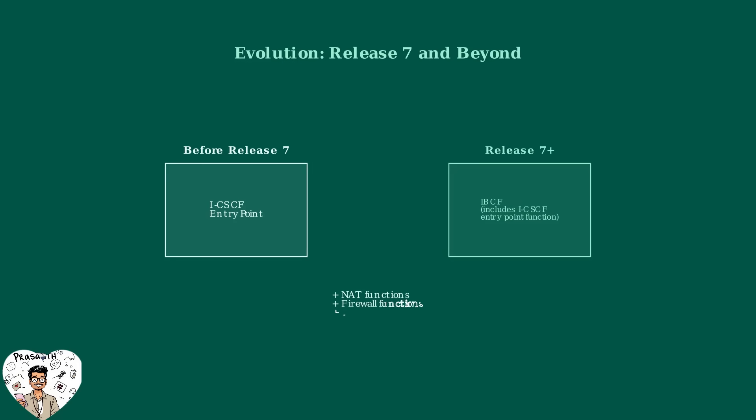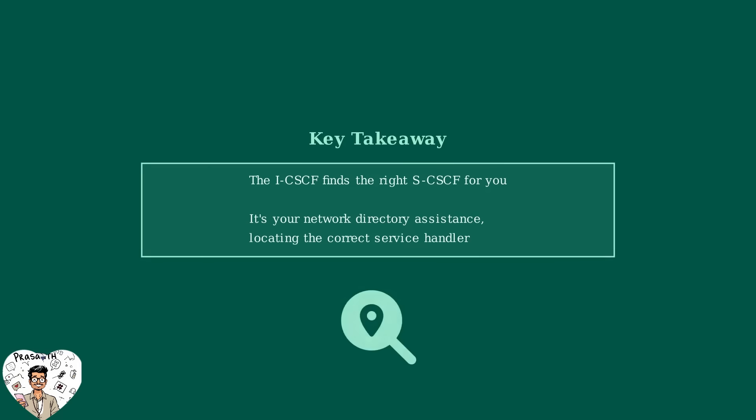An important evolution occurred from Release 7 onwards: the entry point function of the ICSCF can now be part of the IBCF, the Interconnection Border Control Function. This enhancement provides additional NAT and firewall functions for better network security and connectivity. The key takeaway is that the ICSCF finds the right SCSCF for you — it acts as your network directory assistance, ensuring that your registration request reaches exactly the right service handler in the IMS network.